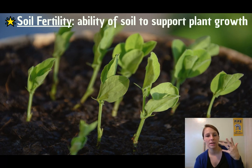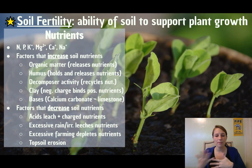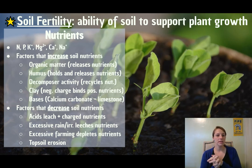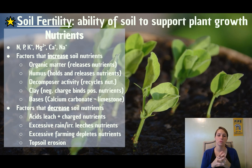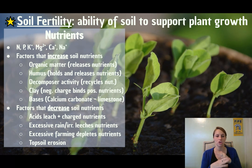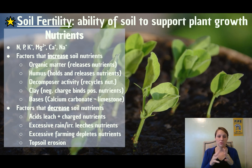Soil fertility is the ability of soil to support plant growth. There are a couple of things related to how fertile soil is. First, nutrients — things like nitrogen, potassium, calcium, and magnesium — are all necessary for plants to grow and survive. Organic matter broken down into humus holds nutrients and slowly releases them so plants can access them. Additionally, having some clay is beneficial because these positively charged nutrient ions bond to negatively charged clay particles, holding nutrients in the soil.